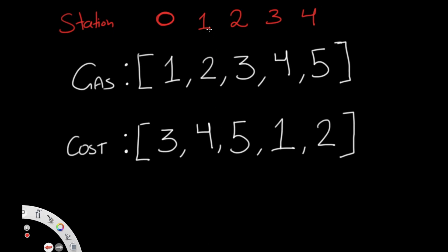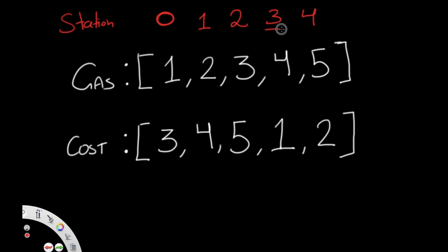Let's go through this one by one. If we're at station one, the amount of gas we get is the first index of the gas array, which has a value of two — so we get two liters of gas. But if we want to go from station one to station two, the cost is four liters. As another example, the cost value at index three tells us how much gas it takes to get from station three to station four, and the gas value at index three tells us how much gas we get at station three.